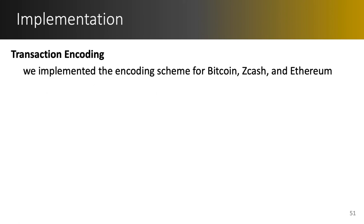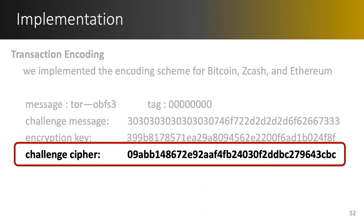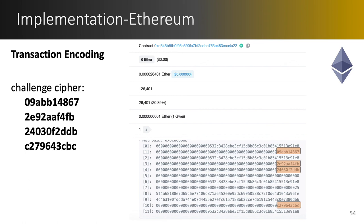Next we move on to the transaction encodings. We implemented the encoding scheme for Bitcoin, Zcash, and Ethereum. As an example, we took a Tor OBFS3 bridge request as the message with 8 zeros as the tag. The hexadecimal of the challenge message, encryption key, and challenge cipher are shown. Note that the challenge cipher is a simple XOR of the challenge message and the encryption key. What is important is the challenge cipher that needs to be encoded in the transaction. Here we show a real Bitcoin transaction in the Bitcoin testnet where the challenge cipher is encoded in the second output. We also show an Ethereum example where the same cover text is split into four parts and encoded inside the input values of a well-known smart contract.